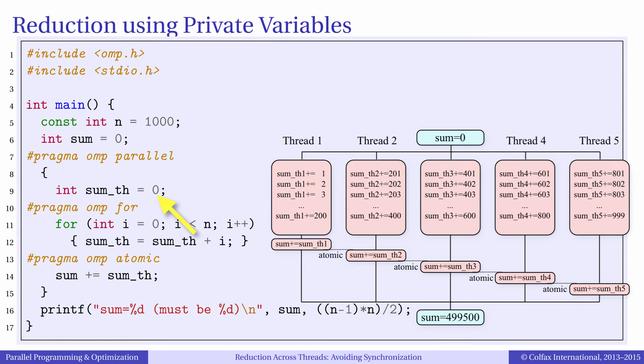Then we start a parallel loop and inside this loop we increment the private variable sum_th instead of sum. Now we don't have a race condition because each thread writes to its own memory region.